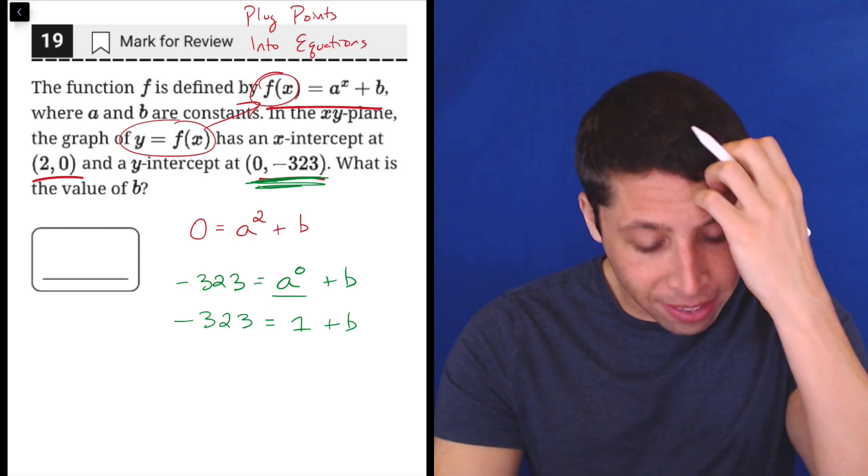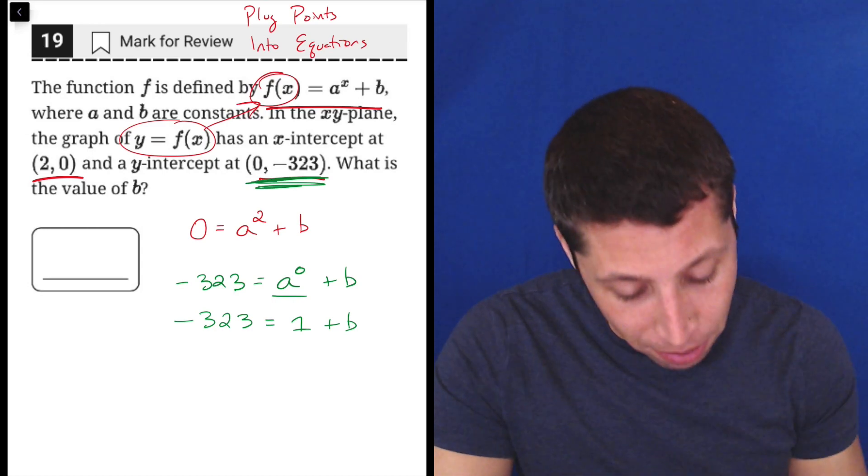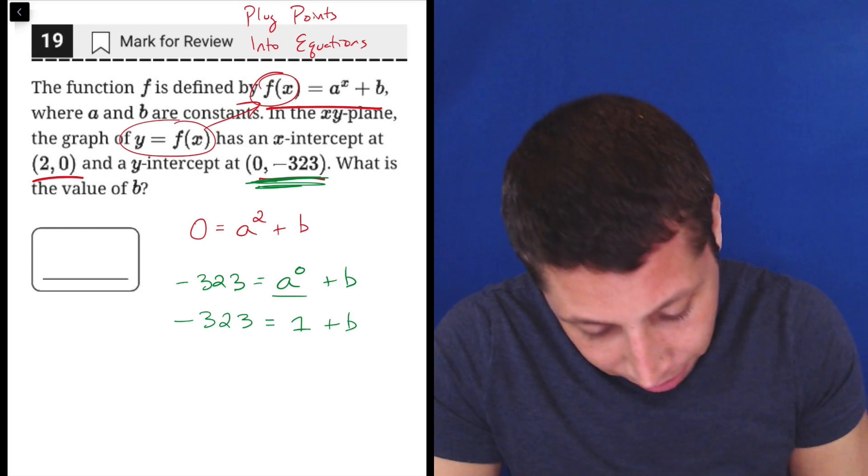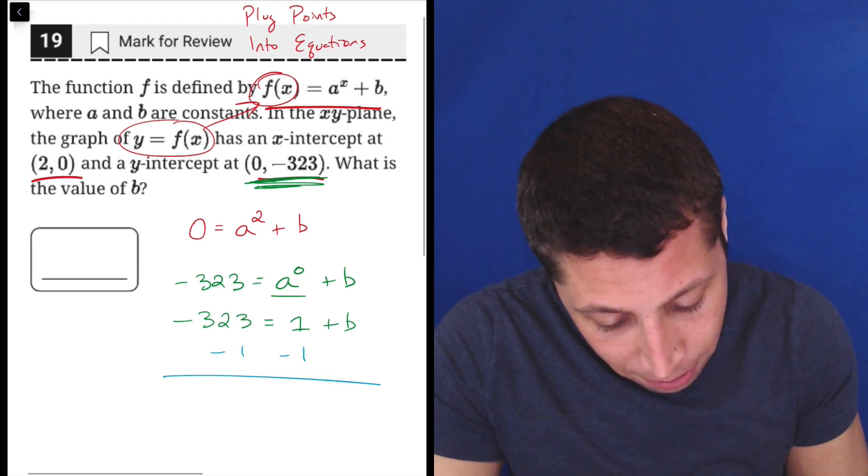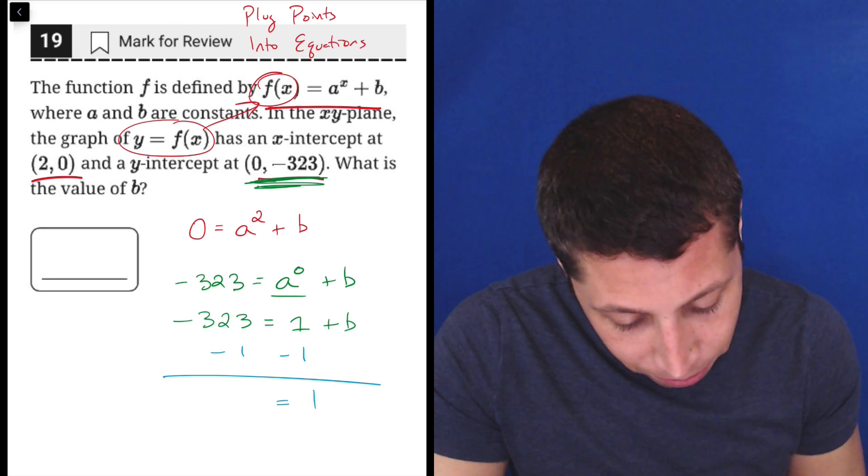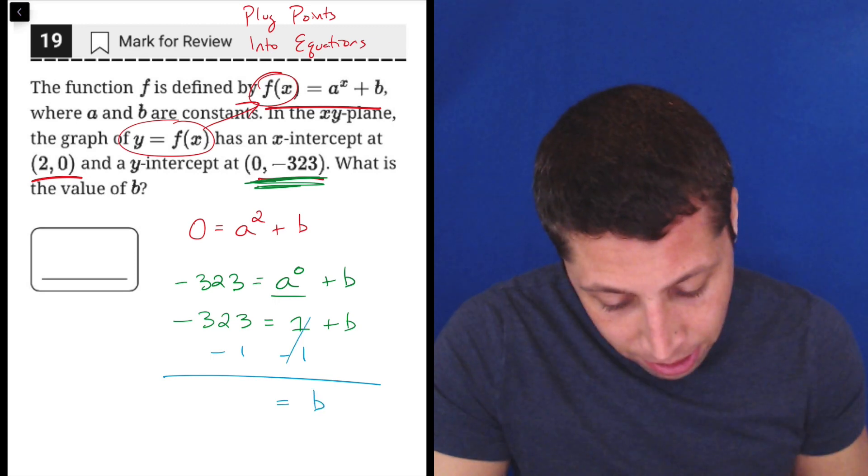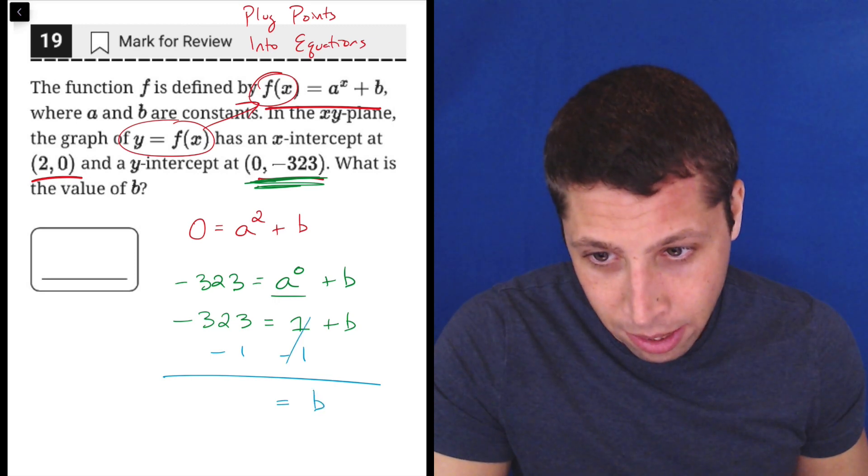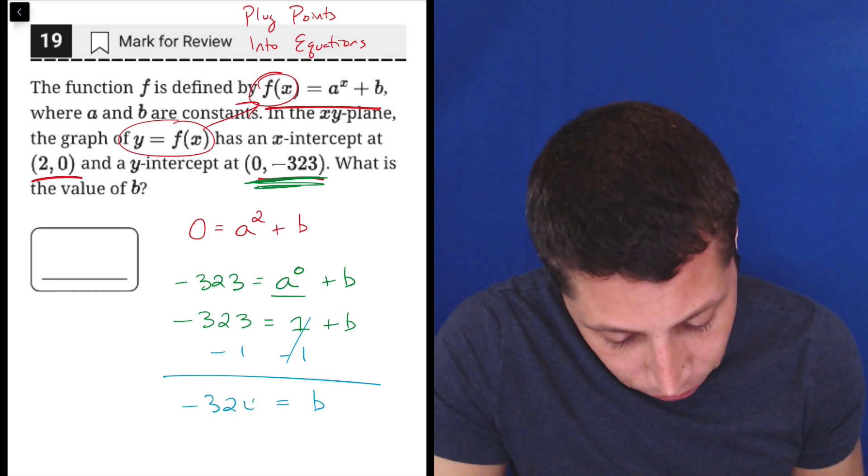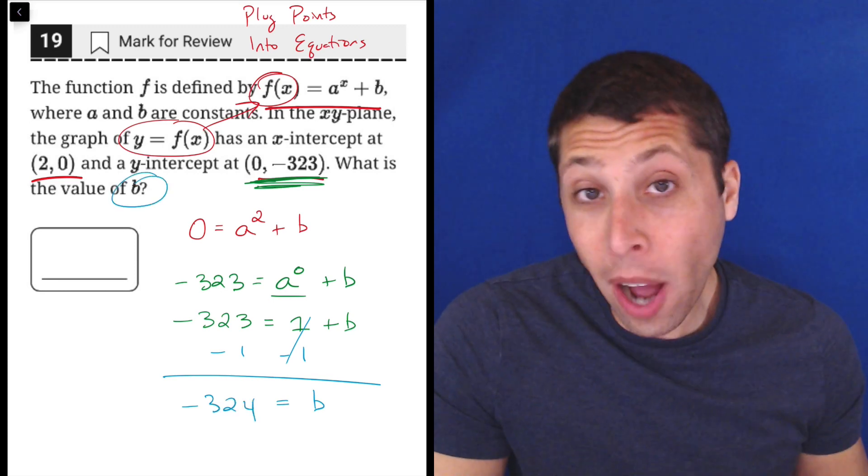So we can make that substitution. And then suddenly this question opens up, right? We can then say, all right, well, let's subtract 1 and that'll get us b, right? So that cancels this out. And negative 323 minus 1 is negative 324. And they want b.